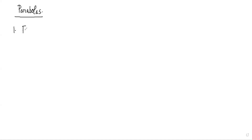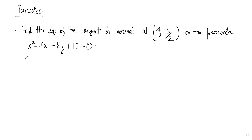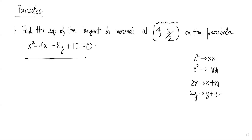The first question is: find the equation of the tangent and normal at (4, 3/2) on the parabola x² - 4x - 8y + 12 = 0. We saw in the previous class that whenever we have a general conic and the point is given, we can write the equation of the tangent easily by replacing x² with xx₁, y² with yy₁, 2x with x+x₁, 2y with y+y₁, and 2xy with x₁y + xy₁.